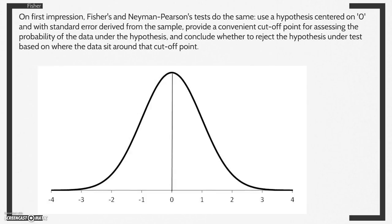On first impression, Fisher's and Neiman-Pearson's tests do the same. They use a hypothesis centered on zero and with standard error derived from the sample. They provide a convenient cutoff point for assessing the probability of the data under the hypothesis, and conclude whether to reject the hypothesis under test based on where the data sit around that cutoff point.